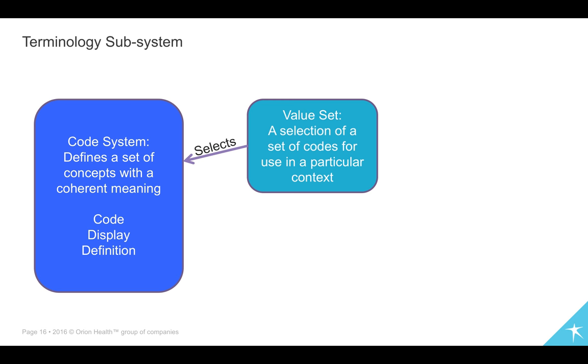And you then have this resource called a value set. And what the value set does is the value set selects a subset from the code system for some particular purpose. So, for example, suppose you were writing an ED or an emergency system, A&E. I'm not quite sure what you call it in the UK. There might be a certain set of SNOMED codes that you use most frequently. They won't be the only ones, but they'll be the most common ones. So the value set can then be used to say, well look, out of a whole of SNOMED, here are the ones that I'm most commonly going to see in an ED system. And the value of that, of course, is that you can then use that value set to help data entry, for example, or to help the consistent coding of diagnoses.